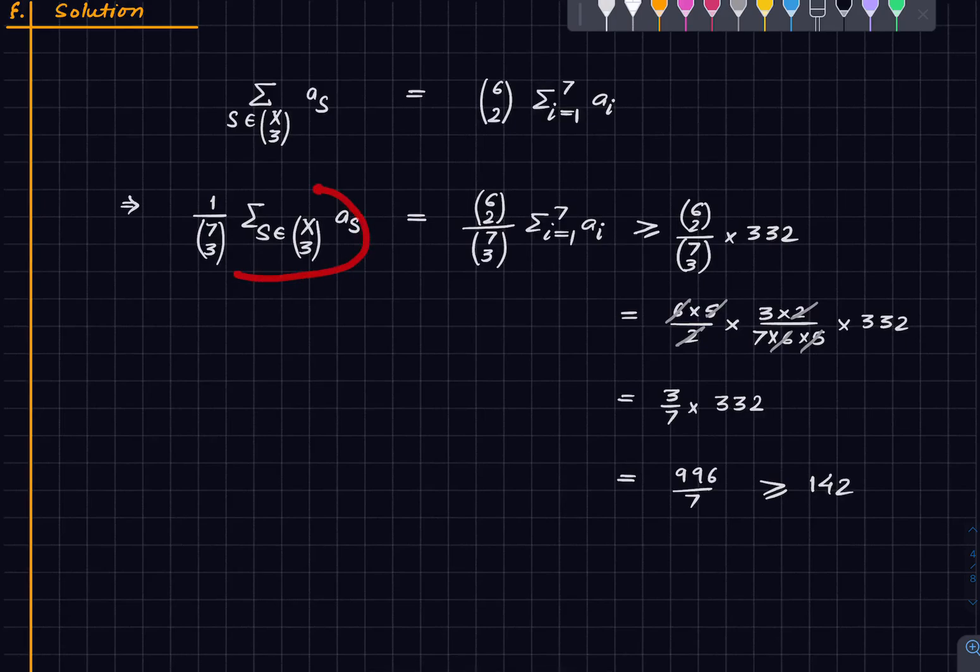So this average is at least 142. And therefore by the averaging principle that we discussed, there must be some s for which a_s is at least 142. And that solves exactly what we wanted to do. That means that one can find 3 people out of the 7 people such that the sum of their ages is at least 142.